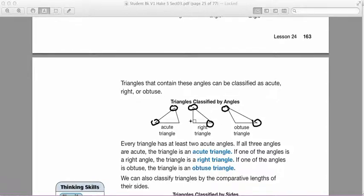Every single triangle has at least two acute angles. However, it's that third angle that we're going to look at. If all three angles are acute, then it is an acute triangle. If that third angle is a right angle, then we call it a right triangle. If that third angle is an obtuse angle, then that triangle becomes an obtuse triangle.